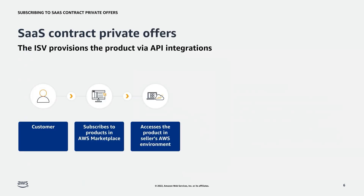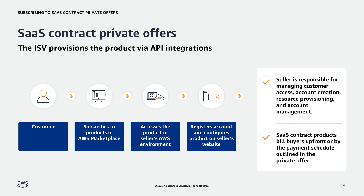Now we'll look at what SaaS Contract Private Offers are and how they're used. With SaaS Subscriptions and SaaS Contracts, customers subscribe to a seller's products in AWS Marketplace but access the product in the seller's AWS environment. After subscribing to the product, the customer is directed to a website the seller has created and manages as part of their SaaS product. There, the seller will register their account and configure the product. The seller is responsible for managing customer access, account creation, resource provisioning, and account management within their software. SaaS Contract Products bill buyers upfront or by the payment schedule dictated in the private offer. SaaS Contracts with consumption products allow for additional usage beyond the buyer's initial purchase. AWS Marketplace bills the buyer on the third of the month after the ISV has sent metering records through the AWS Marketplace Metering Service.